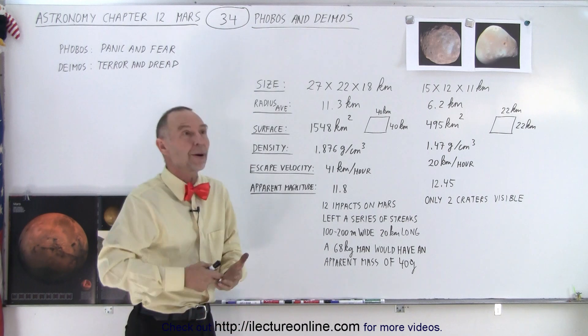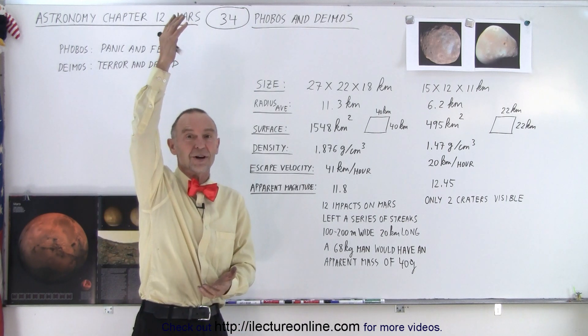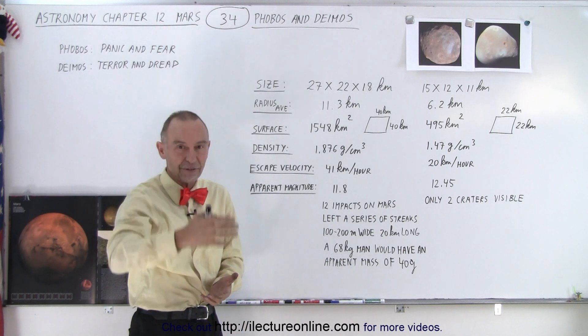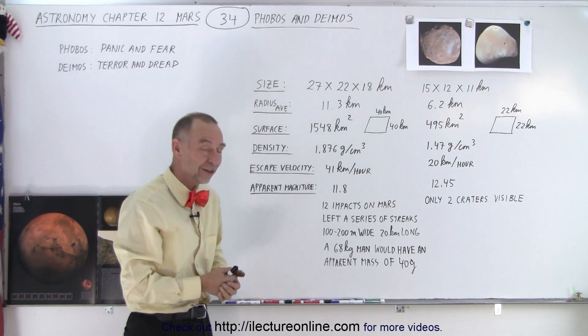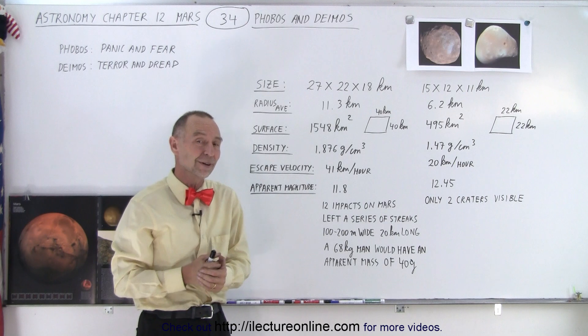So imagine you can jump up probably hundreds of yards into the air and slowly drift back down. If you jump up too high or too fast, you might actually escape the gravitational force of Phobos.